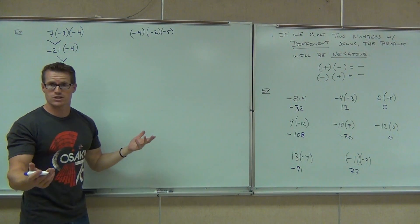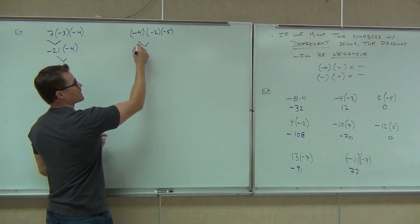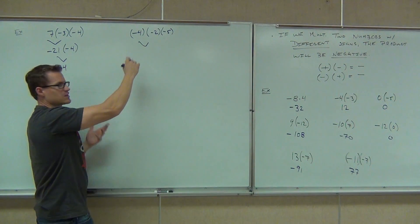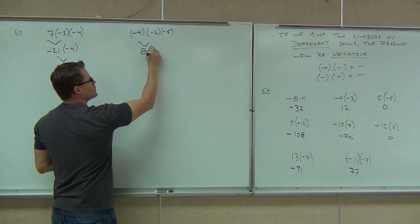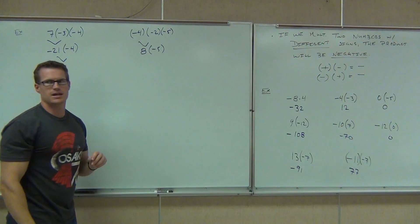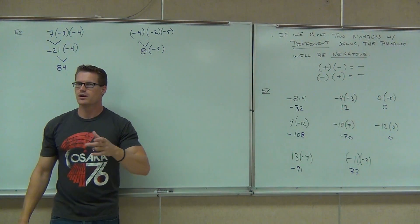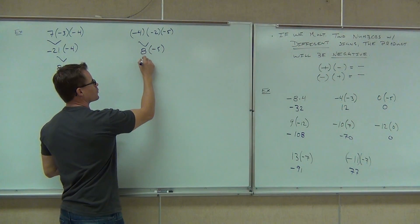If you worked it out just the way it goes: negative four times negative two — that's positive eight. But I still have a negative five. Notice how that negative five has nothing to pair up with. So at the very end we'll have a negative 40.